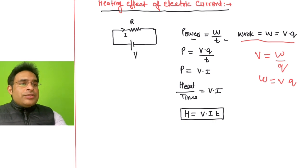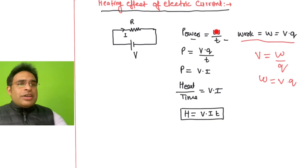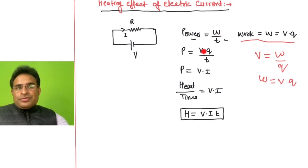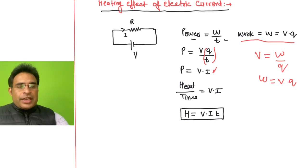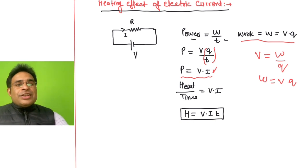Power is equal to W by T. In place of W, I can write V into Q. So P = (V × Q) / T. Now Q divided by T is called electric current. So this becomes P = V into I.